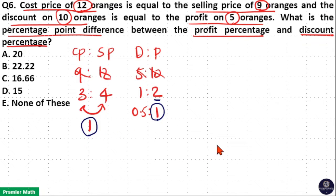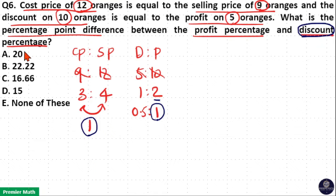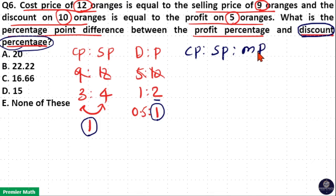If profit is 1 unit, discount is 0.5 unit. We can now find the mark price, because we need the mark price in order to find the discount percentage. Take the cost price, sell price, and mark price ratio — cost price to sell price is 3 is to 4.